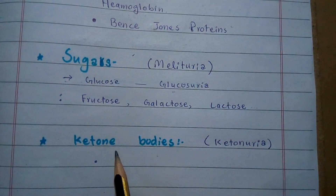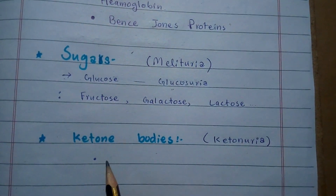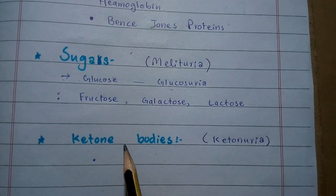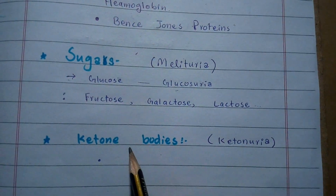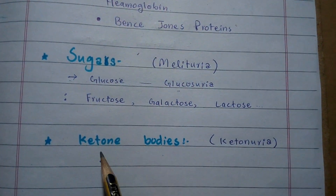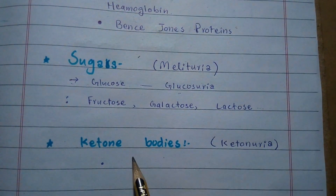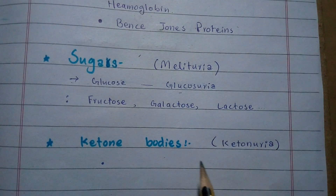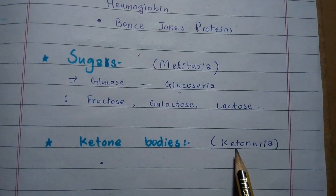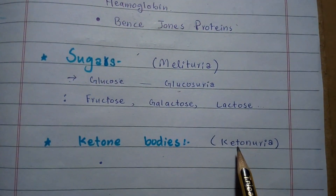Then the ketone bodies. Ketone bodies make the urine abnormal. The presence of ketone bodies in the urine is called ketonuria.